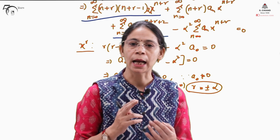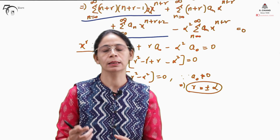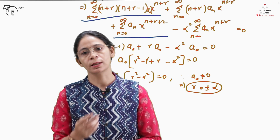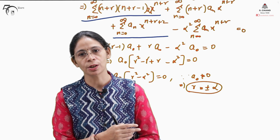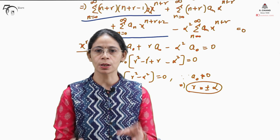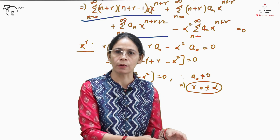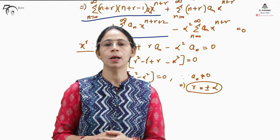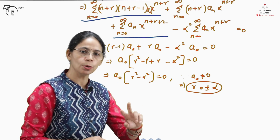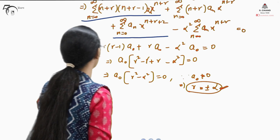Remember that r can take at most two values. This is because it is a second order differential equation, which will have only two solutions. One solution corresponds to r = r₁ and another to r = r₂. These two values of r have been determined from the indicial equation.